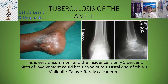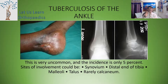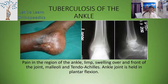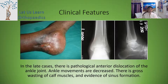Now let us see the tuberculosis of the ankle joint. This is very uncommon and the incidence is only 5%. The site of involvement could be the synovium, distal end of the tibia, malleoli, talus, and rarely the calcaneum. The patient may complain of pain in the region of the ankle, limp, or swelling over and in front of the joint, and malleolar tenderness. The ankle joint is usually held in plantar flexion, as shown in the first clinical photograph. In late cases, there is a pathological anterior dislocation of the ankle joint, and the ankle movements are decreased.